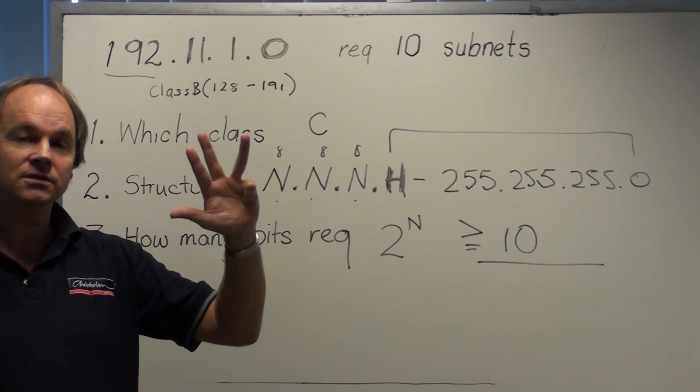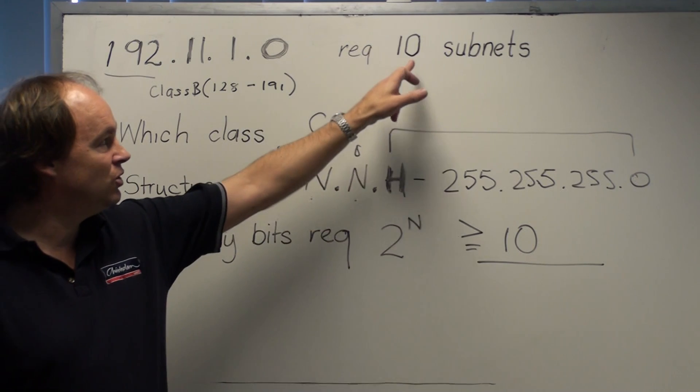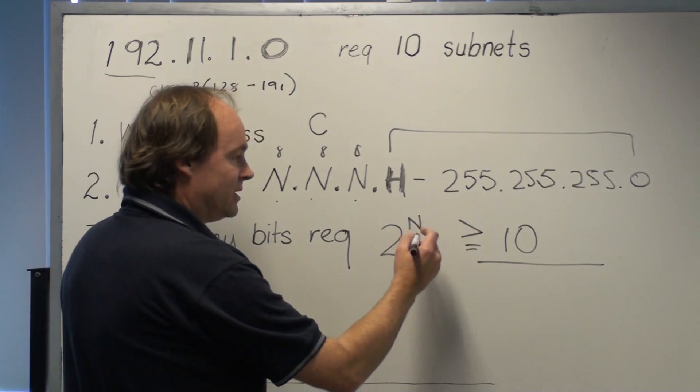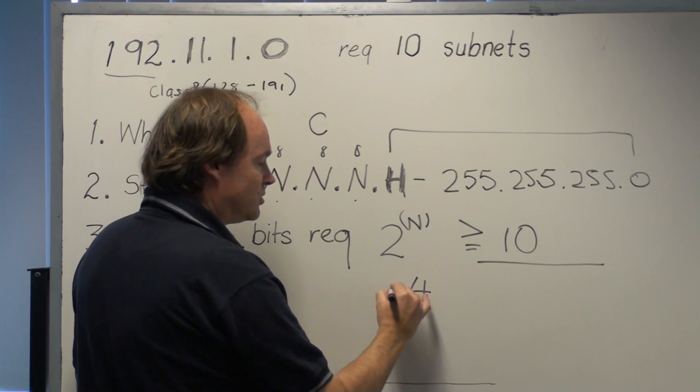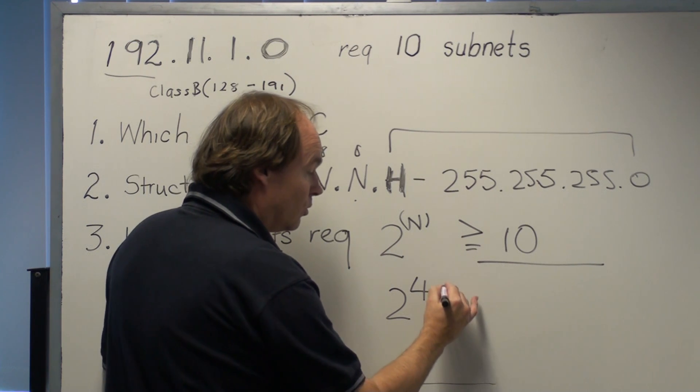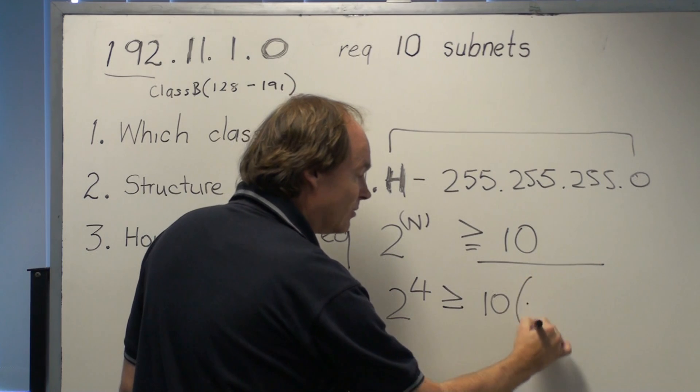4 bits, 4 fingers, gets us 16. Now 3 bits wasn't enough because we needed at least 10. So we need 4 bits. So the N in this case will be 4 bits. 2 to the 4 is equal to or greater than 10, because it's actually really 16.